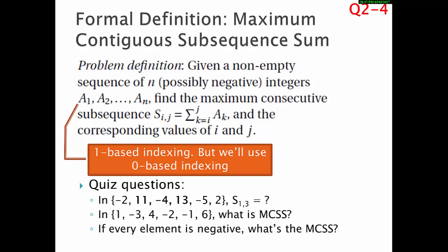So here's our formal definition. Given a non-empty sequence of N possibly negative integers. And the formal definition mathematically, mathematicians use one base indexing. We're actually in all of the work that we're going to do, we're going to start it at zero. So starting at zero, just like an array, we want to find the maximum consecutive subsequence.